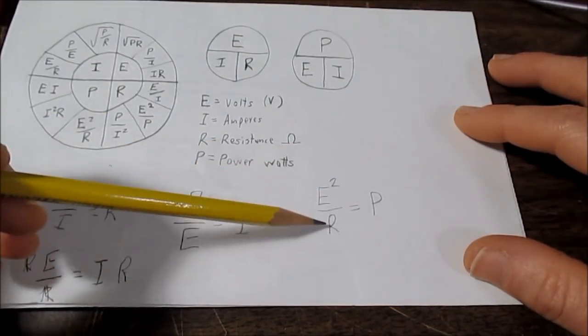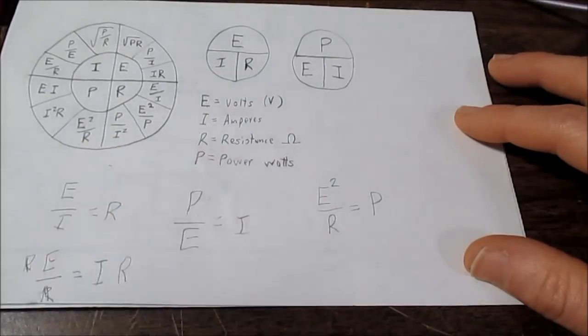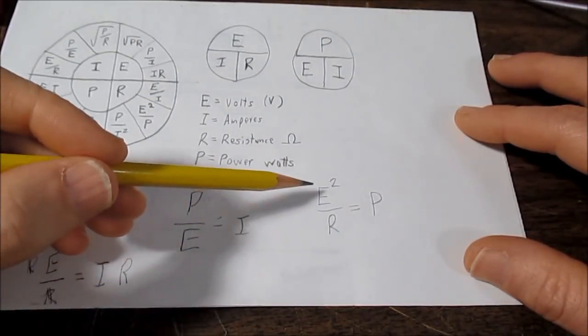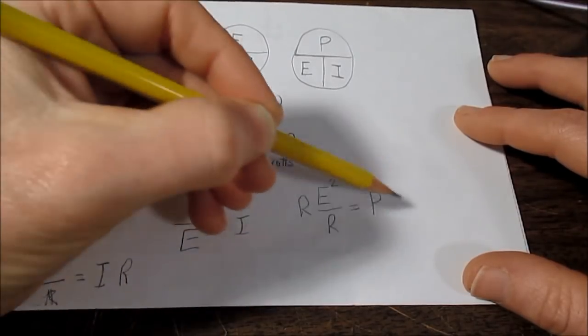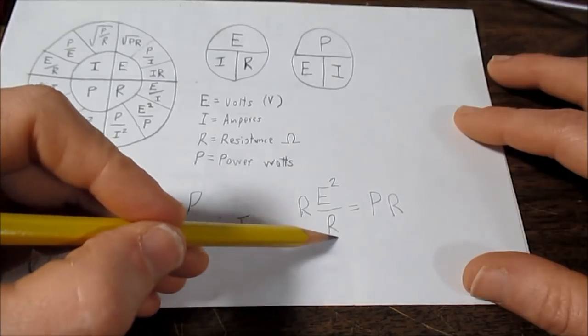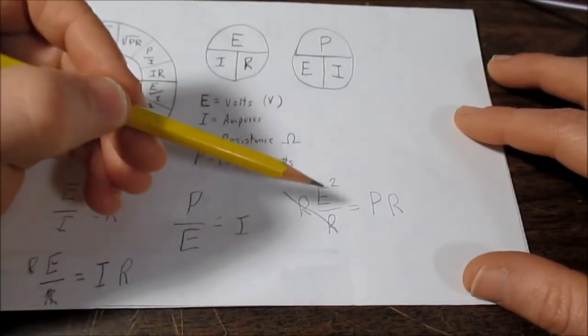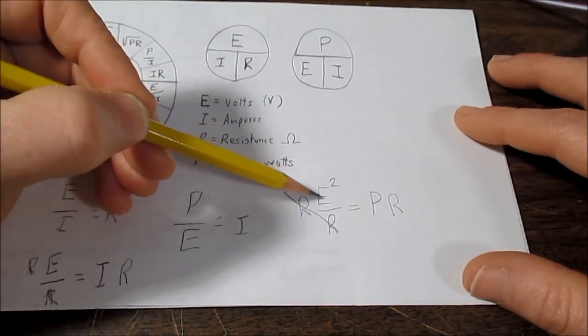Now, if we have power and resistance, and we're trying to find voltage, it's a little bit different because it's squared. So what happens is, we take R, multiply it on both sides, these cancel out.